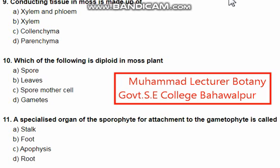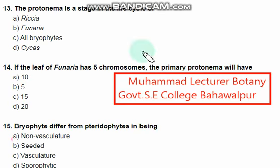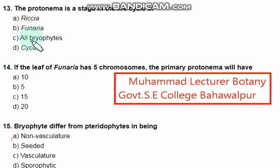A specialized organ of the sporophyte for attachment to the gametophyte — the right option is the foot, which is option B. The protonema is a stage in the life cycle of which organism — Riccia, Funaria, or all bryophytes? The right option is Funaria.